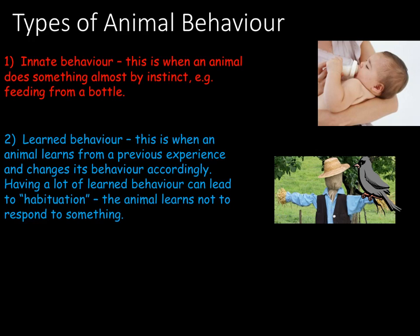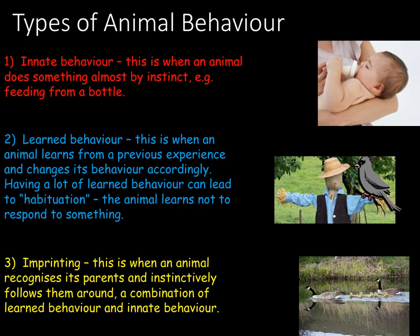Some types of behaviour are a mixture of both innate and learnt. One example is imprinting — when an animal recognises its parents and instinctively follows them around. So we have the innate behaviour of following the parent as well as the learnt behaviour of following what they do. This behaviour is especially prominent in birds, which have an instinct to follow the first moving object they see, which should be their parent. The animal has no innate instinct of what its parents look like, so they have to learn this.